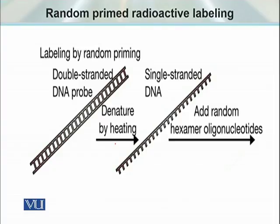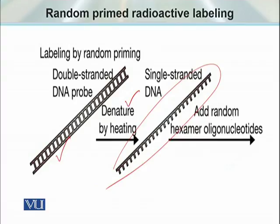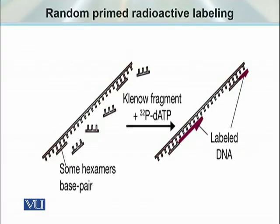As you can see in this picture, this is the double-stranded DNA which is denatured by heating, leaving only a single strand of DNA which will act as a template. In the second step, those oligonucleotides or primers, known as hexamers, are going to bind with the template strand at random positions, and the extension of those primers is going to fill up the gaps.